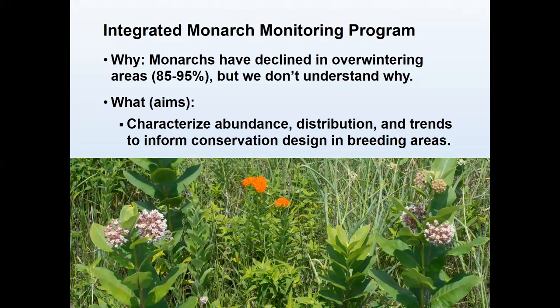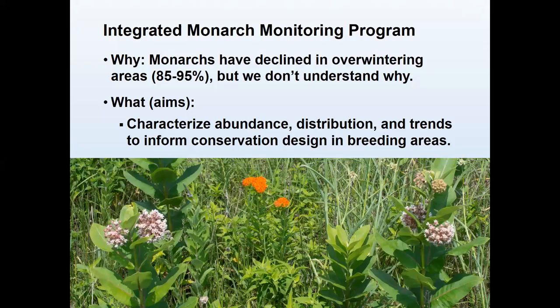Monarch caterpillars can only eat milkweeds. Milkweeds have been disappearing from agricultural areas with the adoption of glyphosate-tolerant crops. Glyphosate is an herbicide — you spray the crops, it doesn't kill the crops, but it kills anything else around the crop field, including milkweeds. Agricultural areas used to be really productive breeding areas for monarchs, and now most of that milkweed is gone. So the program wants to monitor monarchs and milkweed to understand why monarchs are declining and what we can do about it.